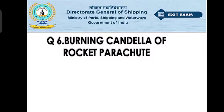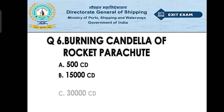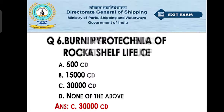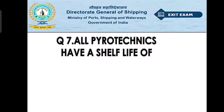Question number six: what is the burning candela of a rocket parachute flare? Option A: 500 candela. Option B: 15,000 candela. Option C: 30,000 candela. Option D: none of the above. The right answer is option C — 30,000 candela. The rocket parachute ignites a light with a burning intensity of 30,000 candela.